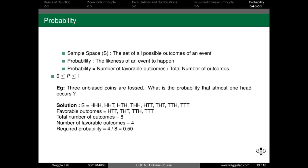For example, toss one coin. The outcomes are head and tail. The probability of head occurring is 1 by 2, because there is 1 favorable outcome out of 2 total outcomes. This applies to an unbiased coin, where head and tail are equally likely.